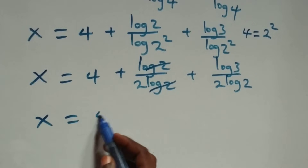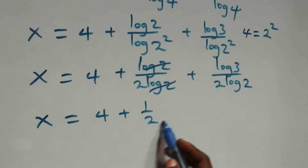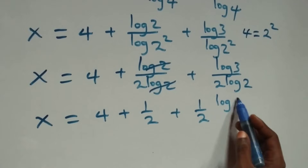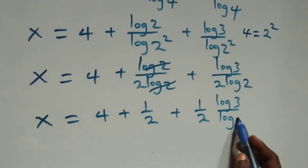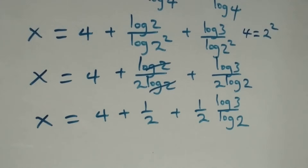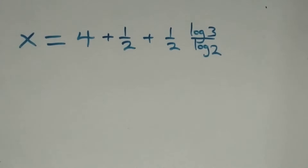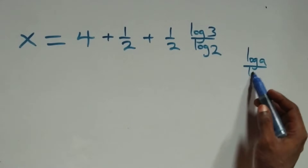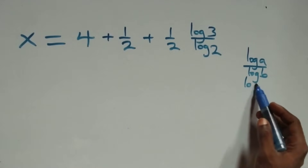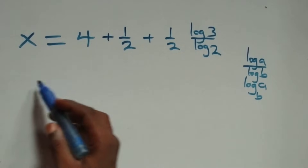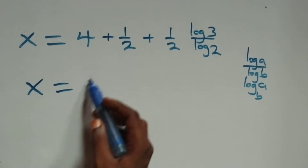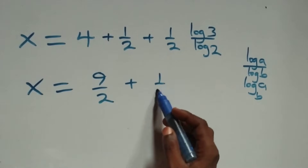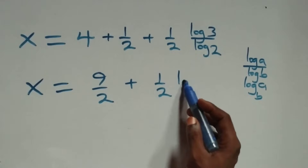Log two over two log two simplifies to one half. So x equals four plus one half plus log three over two log two, which is the same as x equals four plus one half plus log three over log two, all times one half. Applying change of base — log a over log b equals log a to base b — log three over log two becomes log three base two.